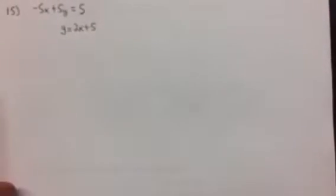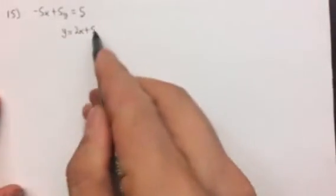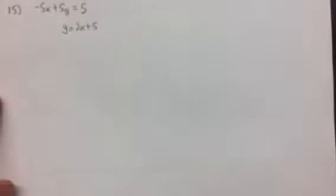In summer homework number 15, we have a system of equations. There's more than one equation, and we're looking to solve for both of the variables x and y. So our solution will be x equals something and y equals something. We can also write it as a point x, y.